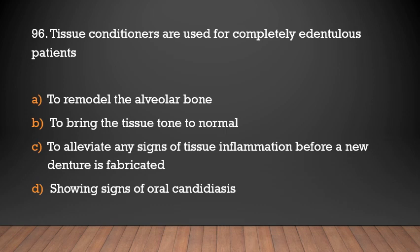Tissue conditioners are used for completely edentulous patients: to remodel the alveolar bone, to bring the tissue back to normal, to alleviate any signs of tissue inflammation before a new denture is fabricated, or showing signs of oral disease.